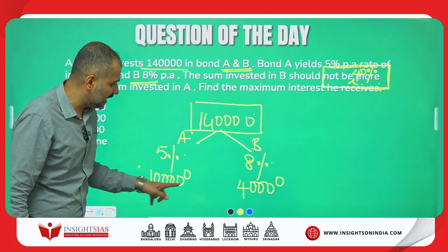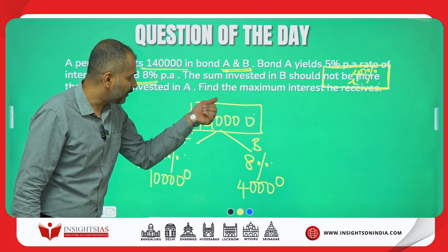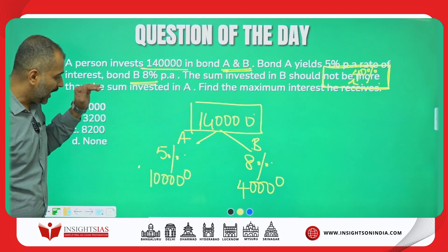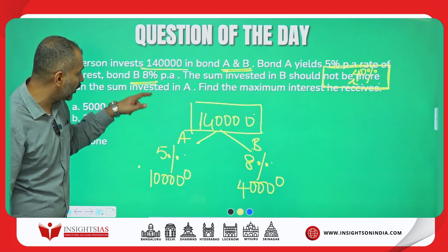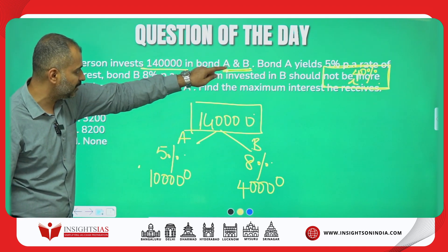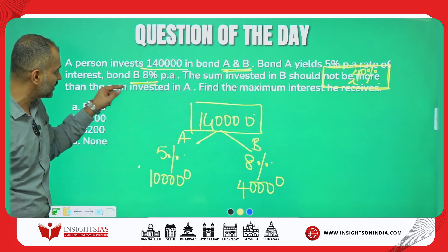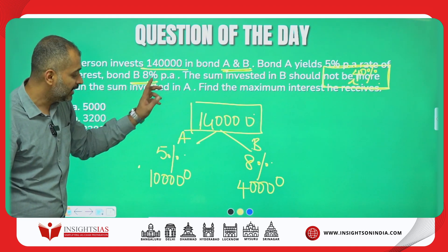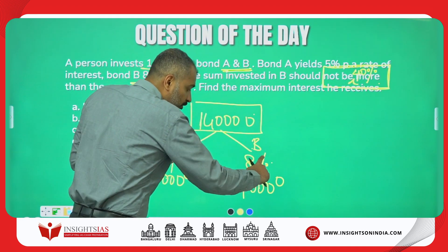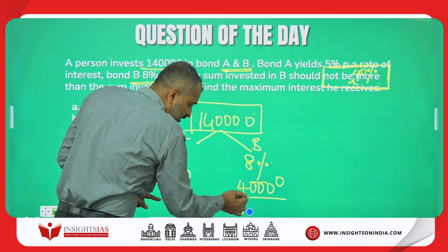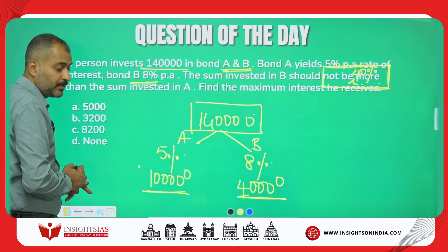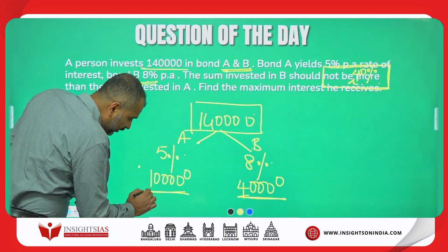You have to split ₹1,40,000 in such a manner that you put ₹1,00,000 in A and ₹40,000 in B to find the maximum interest receivable. To maximize interest, we cannot invest all at 8% — there is a condition that B should not be more than 40% more than A. So B = ₹40,000 and A = ₹1,00,000 without violating the condition.